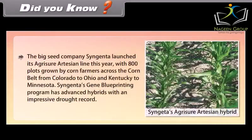Did you know? The big seed company Syngenta launched its Agritio Artesian line with 800 plots grown by corn farmers across the corn belt from Colorado to Ohio and Kentucky to Minnesota. Syngenta's gene blueprinting program has advanced hybrids with an impressive drought record.